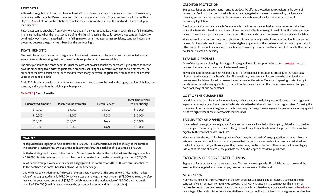Taxation of segregated funds. Segregated funds are taxed as if they were trusts. The insurance company itself, which is the legal owner of the assets of the segregated fund, does not pay taxes on income earned by the fund. Allocation. A segregated fund's net income, whether in the form of dividends, capital gains, or interest, is deemed to be the contract holder's income. In non-registered accounts, this income is taxable in the current year. The amount of income deemed to have been earned by each contract holder is calculated using a procedure known as allocation. A percentage of the fund's total income is allocated to each unit according to the terms of the segregated fund contract.